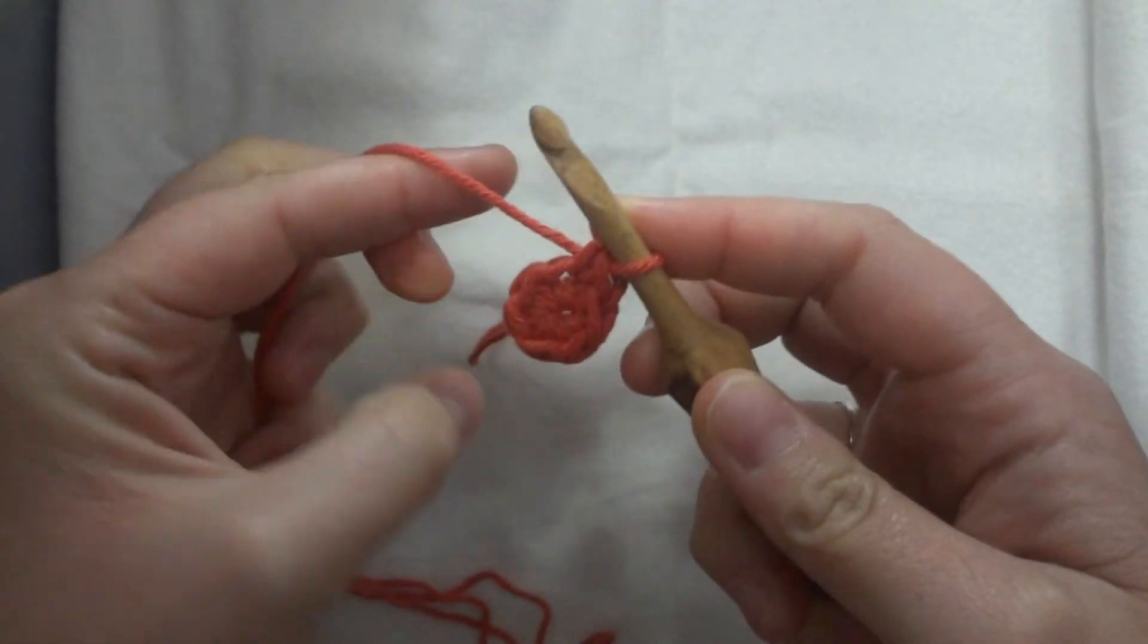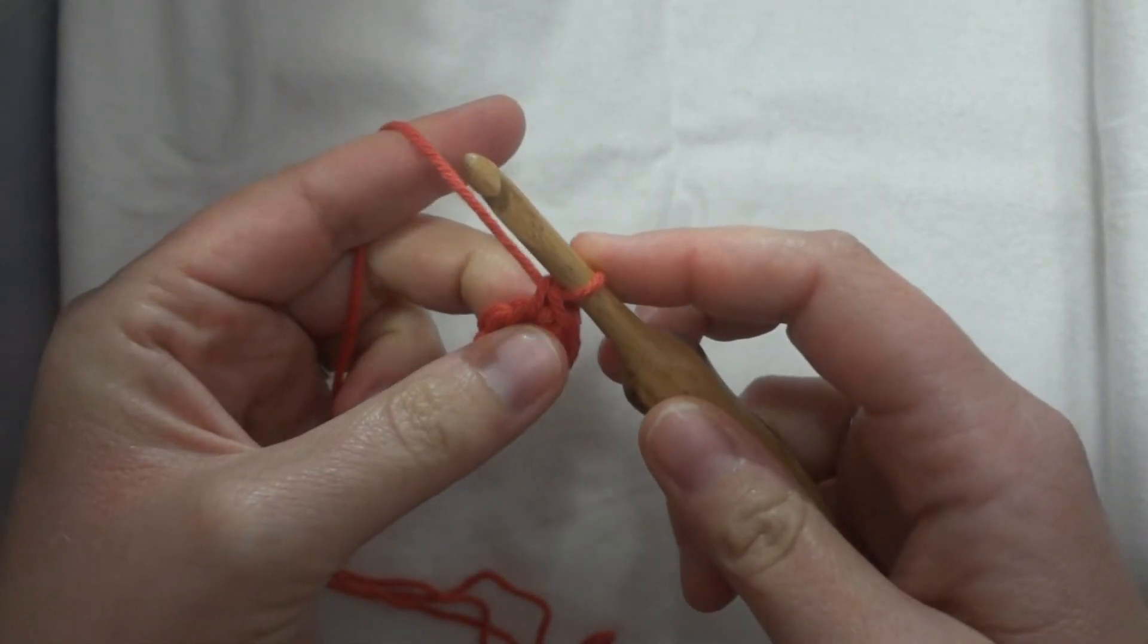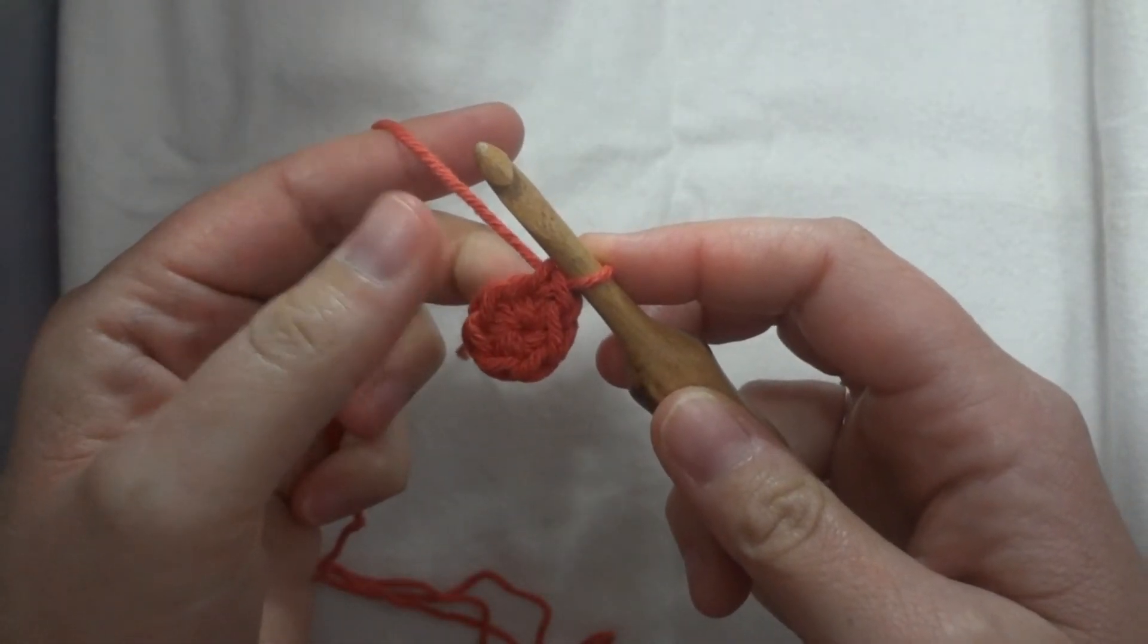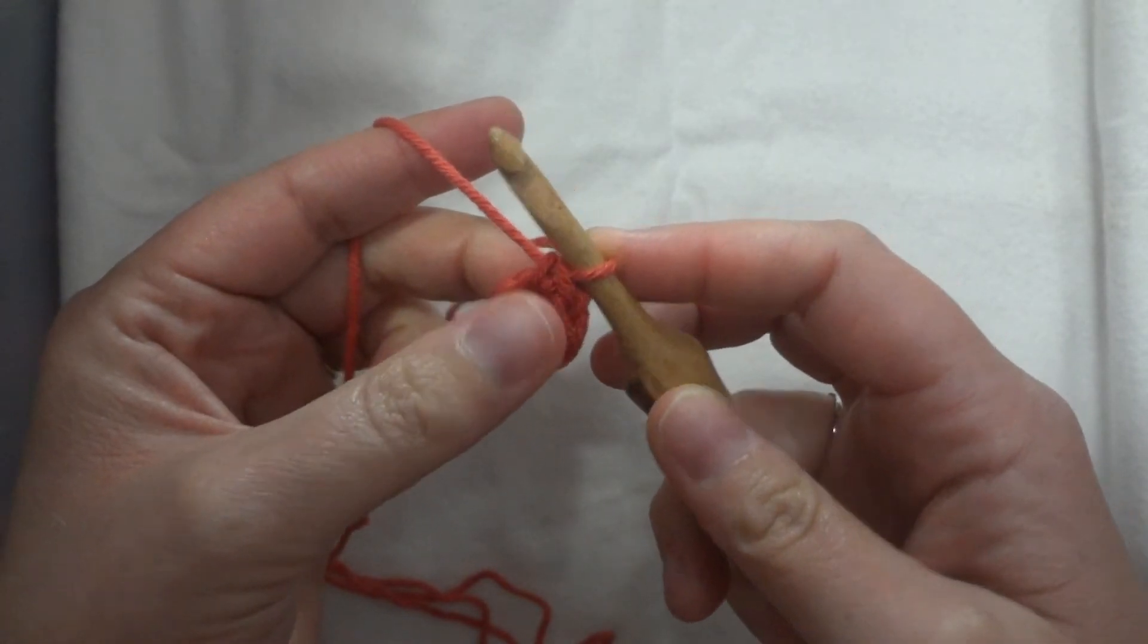And then if I just keep working around and around and around, then I can make a spiral. So that's how to use a slip stitch to begin a circle.